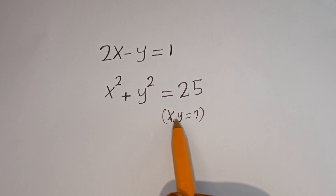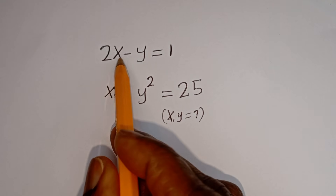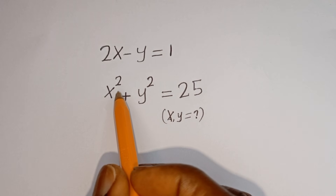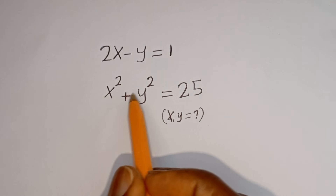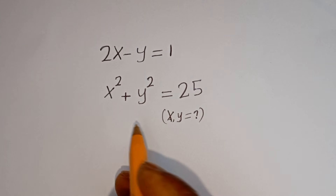Hello. How to solve for x and y in this equation: 2x minus y is equal to 1, and x squared plus y squared is equal to 25.